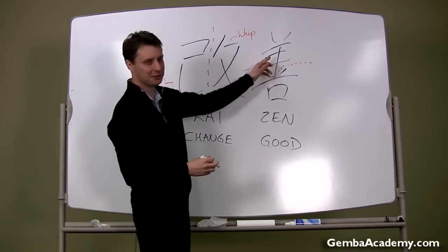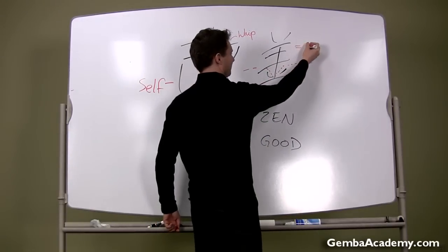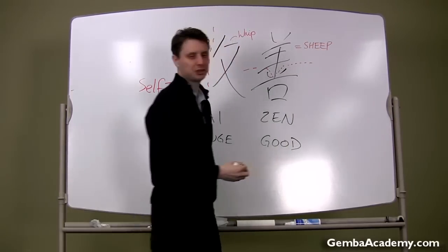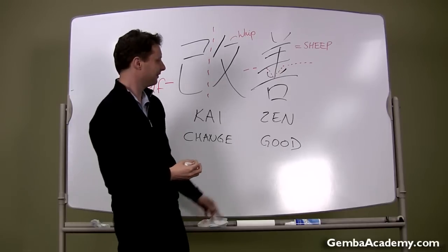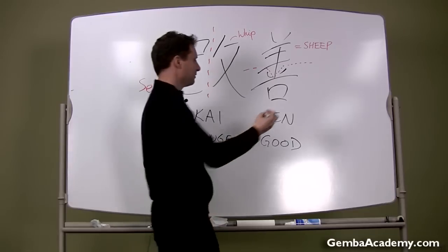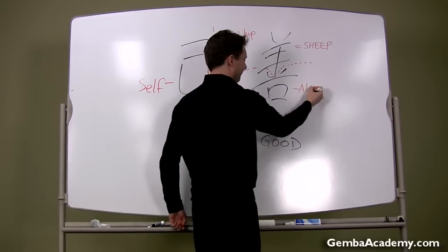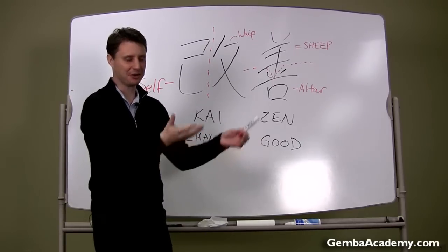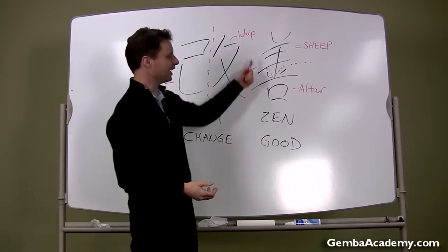This one here, I know it's kind of hard, but this one means like a sheep or a lamb or a goat, if you will. You'll never guess what this is. I didn't either until I studied this stuff, but this is an altar. Okay? So just like you sacrifice a lamb on an altar, it's sacrifice.